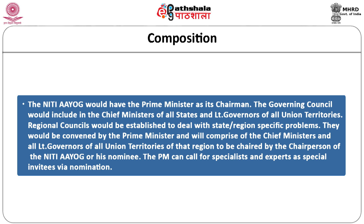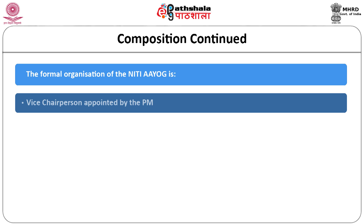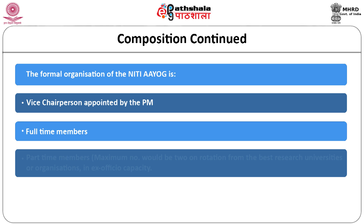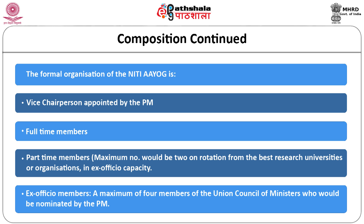The Prime Minister can call for specialists and experts as special invitees by nomination. The formal organization of NITI Aayog includes a vice chairperson appointed by the Prime Minister, full-time members, part-time members — with a maximum of two on rotation from the best research universities or organizations in ex-officio capacity — and ex-officio members, a maximum of four members of the union council of ministers nominated by the Prime Minister.